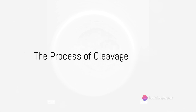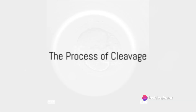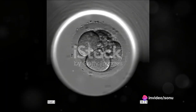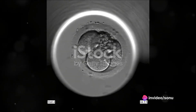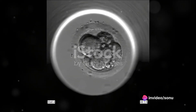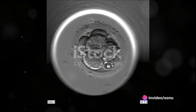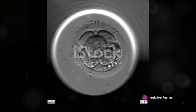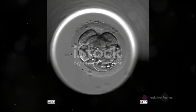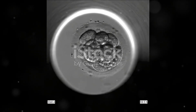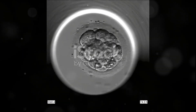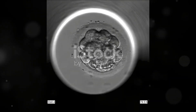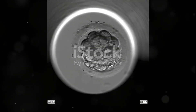The zygote embarks on a journey of cell division, starting with two cells, then four, then eight, and so on. This is the process of cleavage, where each cell, or blastomere, is an exact genetic replica of the original zygote.